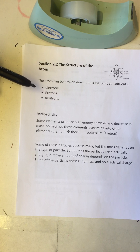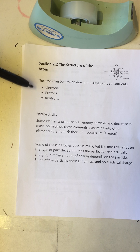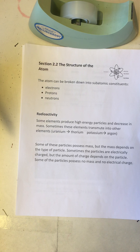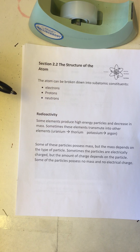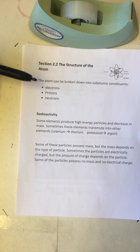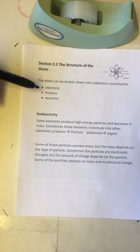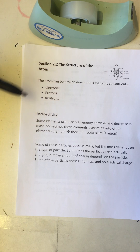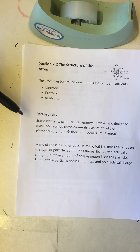One of the findings of years of research is that the atom can be broken down into what are called subatomic particles, or subatomic constituents. Those three particles are called the electrons, the protons, and the neutrons.